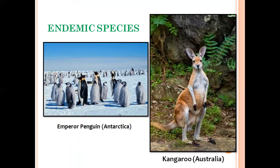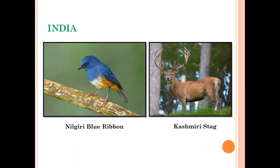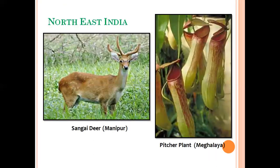The kangaroo is found only in Australia and nowhere else. For Indian examples of endemic species: the Nilgiri blue robin is found in the Nilgiri forests of south India, the Kashmir stag is found only in the Kashmir Valley, the Sangai deer is found in Loktak Lake in Manipur, and the pitcher plant Nepenthes khasiana is found only in Meghalaya.